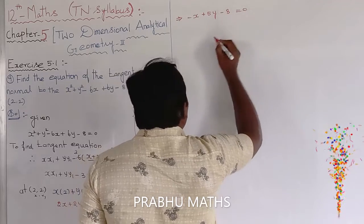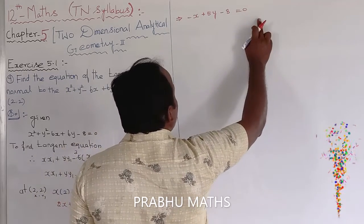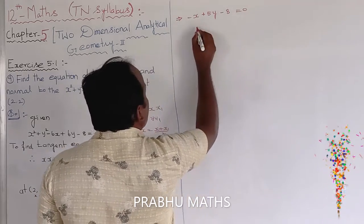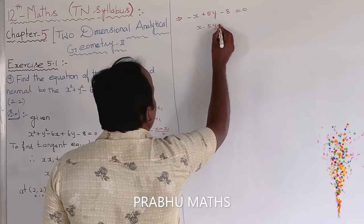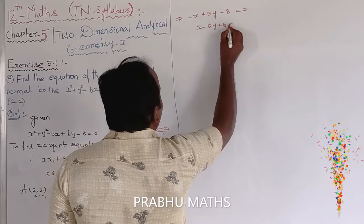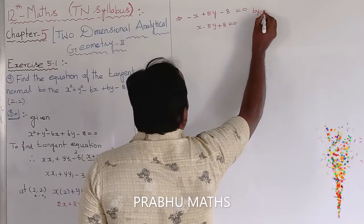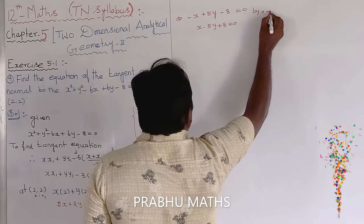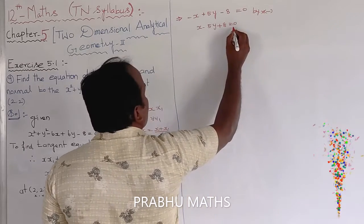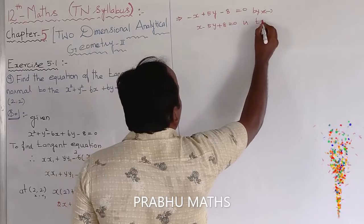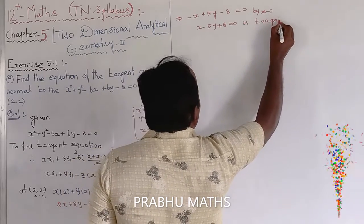Collecting terms: 2x - 3x = -x, and 2y + 3y = 5y, with -6 and +6 cancelling, leaving -x + 5y - 8 = 0. Multiplying both sides by -1 gives x - 5y + 8 = 0. This is the tangent equation.